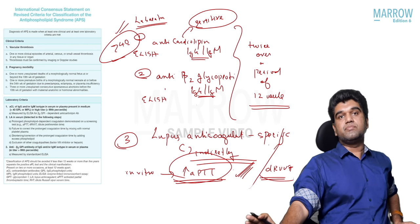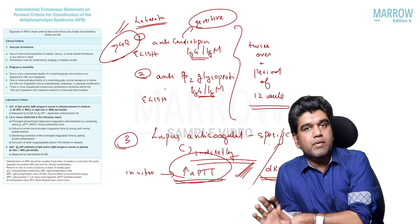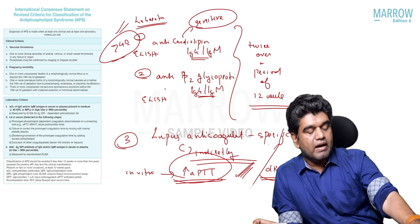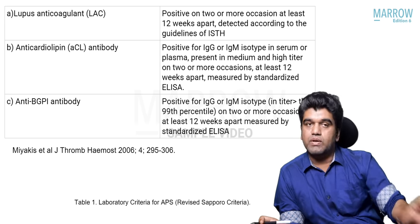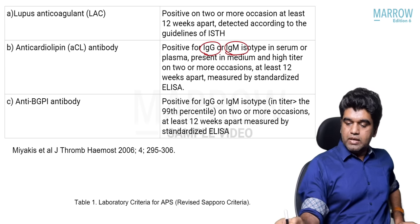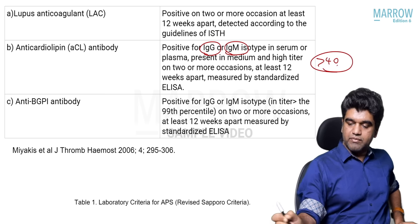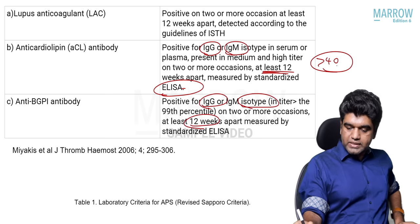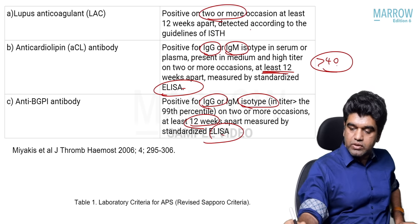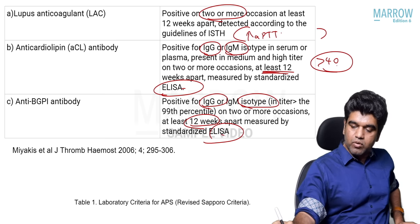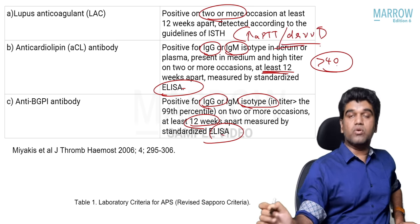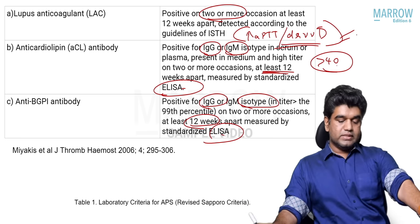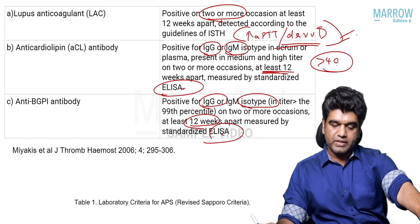This is the lab criteria for APS — the Sapporo modified criteria. Anti-cardiolipin IgG or IgM, titer more than 40, at least 12 weeks apart, twice, measured by ELISA. Anti-beta-2-glycoprotein IgG or IgM, 12 weeks apart, by ELISA. Lupus anticoagulant on two occasions detected by APTT prolongation or diluted Russell's viper venom test prolongation.